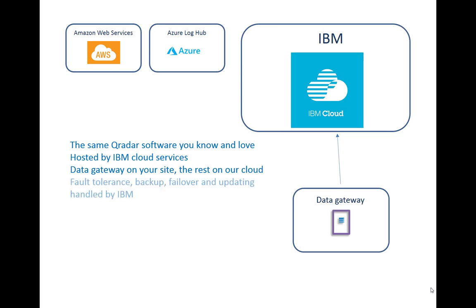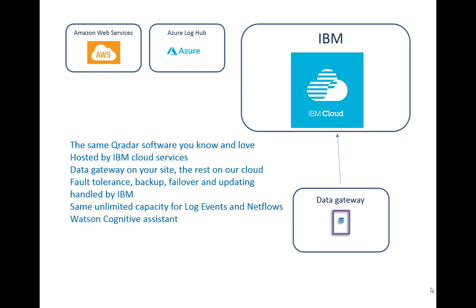The data gateway is a small form-factor box, or we can put it in a VM. It gathers all of your logs, encrypts them, compresses them, and sends them up to our cloud where all the heavy lifting is done. Fault tolerance, backup, failover, and all-day updating are handled by IBM. Rather than building this yourself in AWS or Azure, if you want us to do the heavy lifting on the backend, we'll do it in our IBM Cloud. We have installs north of two million events per second — there is no upper limit to what QRadar can handle, on cloud or on-prem.